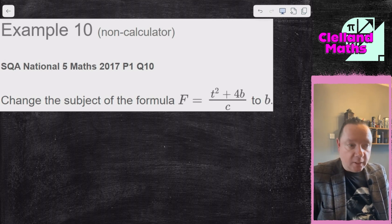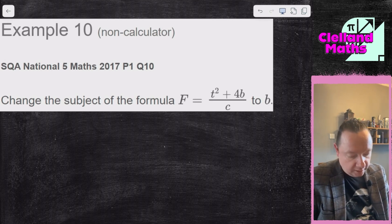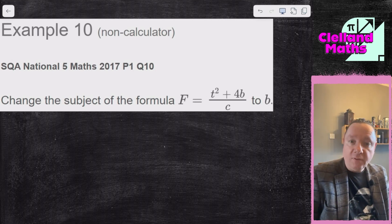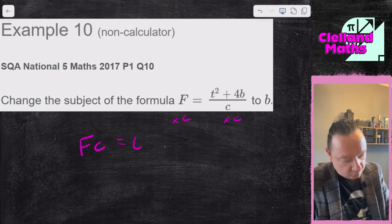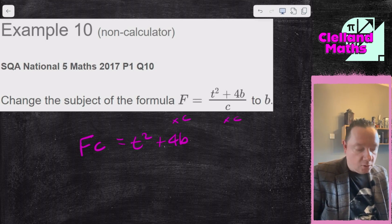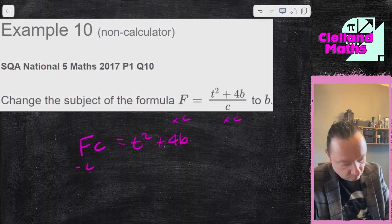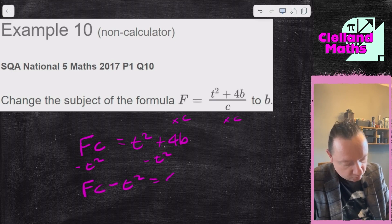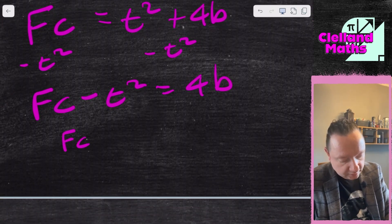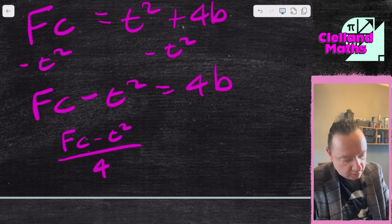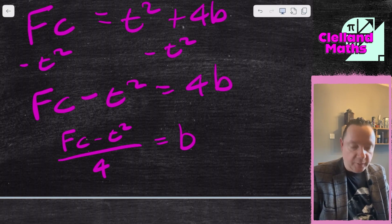Example 10 — SQA National 5 Maths 2017, Paper 1, Question 10. Change the subject of the formula f = (t² + 4b) / c to b. We've got a fraction with c on the bottom, so times both sides by c: fc = t² + 4b. Now take away t²: fc minus t² = 4b. And divide by 4: fc minus t² all over 4 equals b. And we're done.